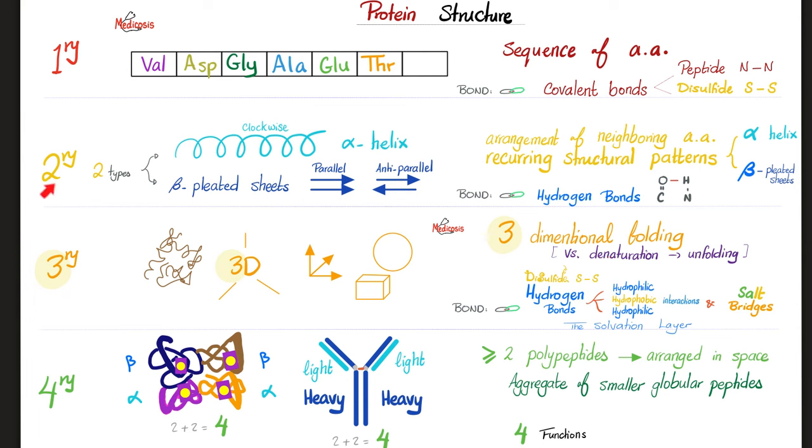Next, secondary. Two for two. Two types, such as the alpha helix. Remember the clockwise. And the beta-pleated sheets could be parallel or anti-parallel. What's keeping them in place? Hydrogen bond. Between what? Between the oxygen of the carbonyl group and the hydrogen of the amide group. Between the oxygen and the hydrogen will have a hydrogen bond.